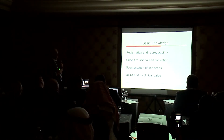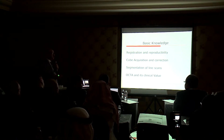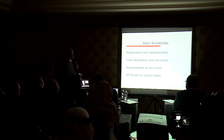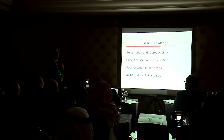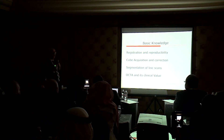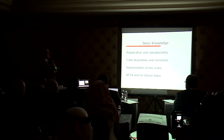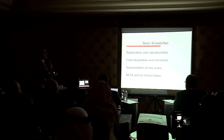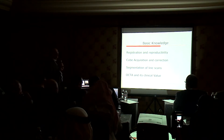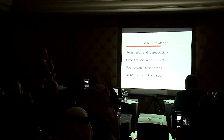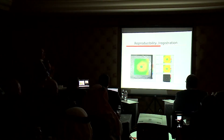What we need to know when we look at OCT — the basic knowledge — we have to know registration and reproducibility. Why? Because we are following up patients nowadays with injections or follow-up operations by OCT, so we need to know if it is reproducible and where the registration is. Second, we can have the cube acquisition and get data from the cube. Then we look at the lines where we see fine details of the retina, and finally the OCT angiography, which will add a lot about the vascular integrity of the retina.